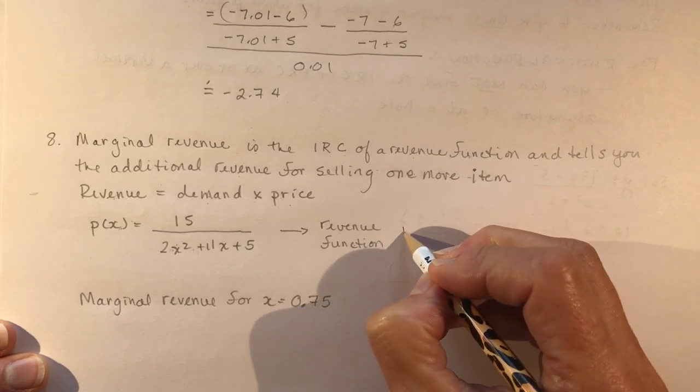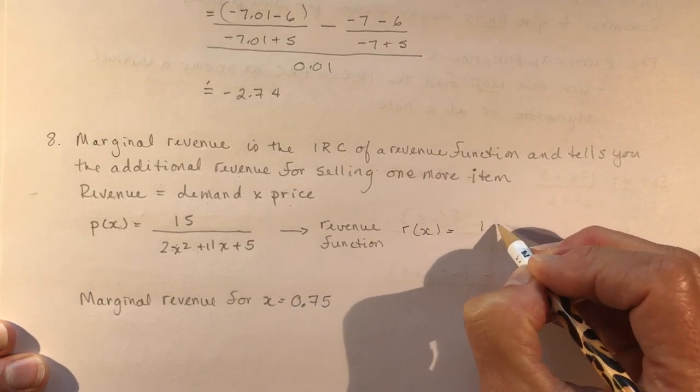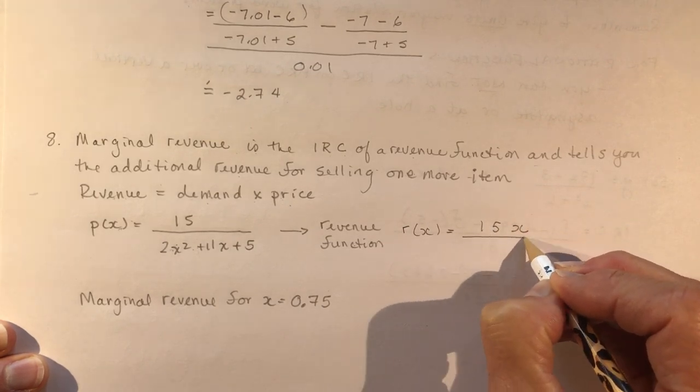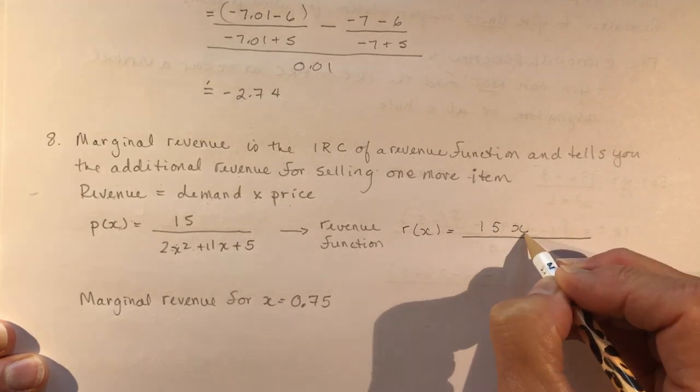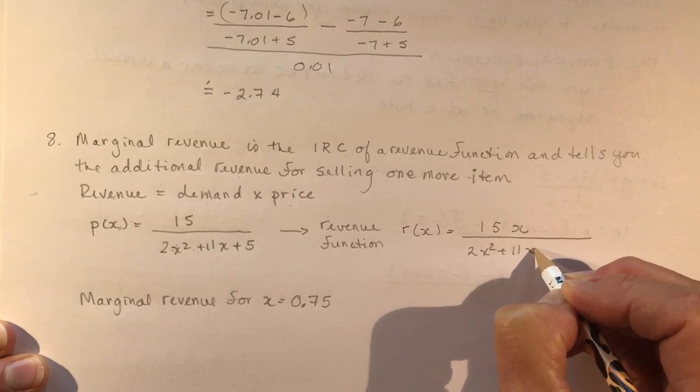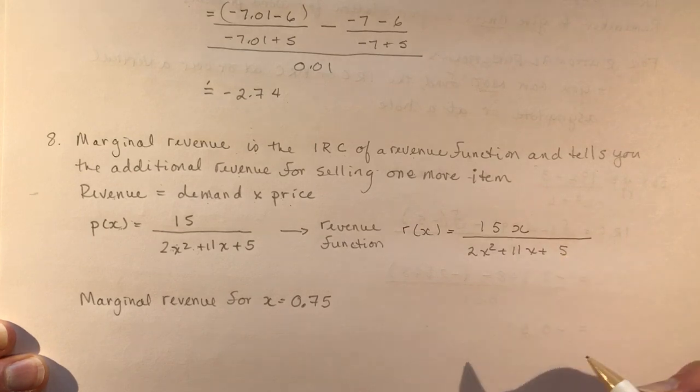So the revenue function, revenue of X, is just going to be 15 times X. That's all you had to do, and I know some students get really confused. Where did this X come from? So it's just saying, well, that's my price. So there's your revenue function.